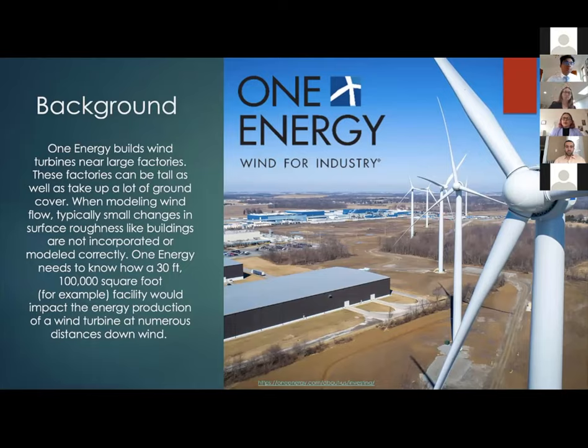Sensor One Energy places between one and six turbines on a manufacturing plant's location and generates power for that manufacturing plant. The smaller obstructions, for example, houses nearby or the manufacturing plant itself, might be an influence. The problem that we were dealing with was to see what kind of influence these small obstructions have on the wind flow.